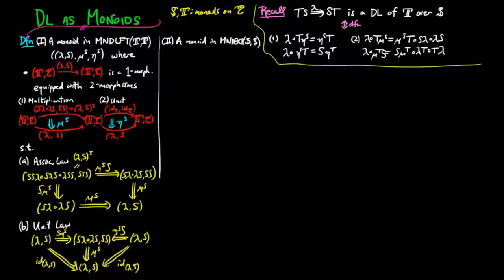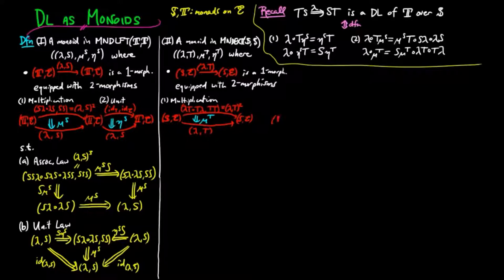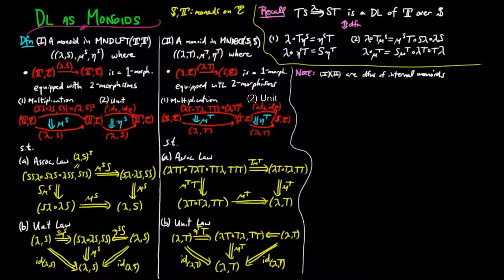Similarly, a monoid in the endomorphism category of S in monad extensions is a triple (lambda T, mu T, eta T), where lambda T is a one-morphism in monad extensions equipped with two morphisms in monad extensions: mu T, called the multiplication from lambda T squared to lambda T, and eta T, called the unit from the identity to lambda T, such that the associative law and the unit law hold. We note that these definitions are particular instances of the more general notion of a monoid internal to a monoidal category.